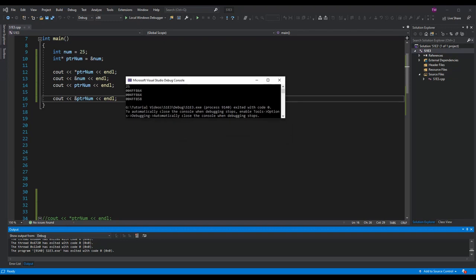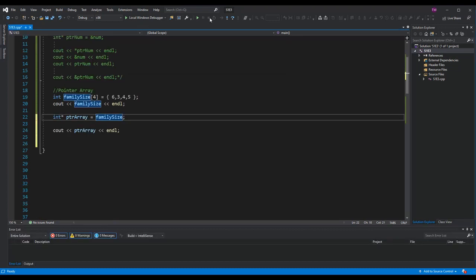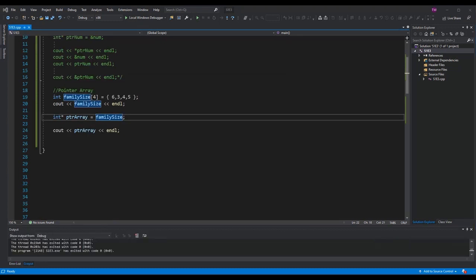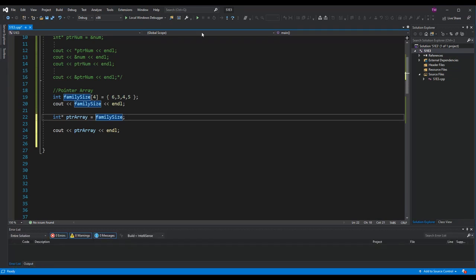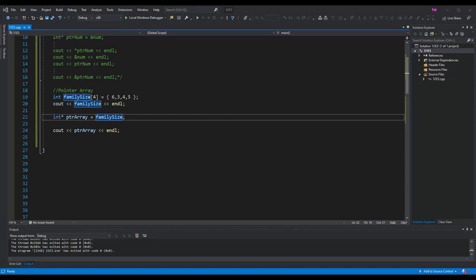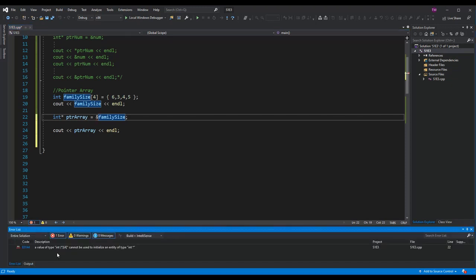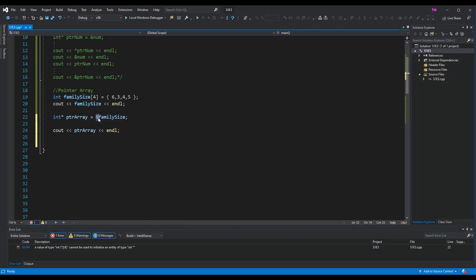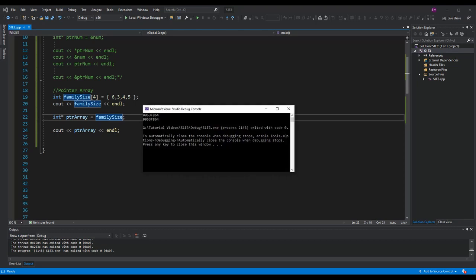I think now is a good time to circle back to our array called family size. On line 20, I am attempting to print the array values to my console, but as we saw earlier, I am only going to get the family size address, not the value. Out of curiosity, what if I try to use the ampersand with family size? I get an error, because the array is already a pointer address. I don't need the redundant ampersand for getting the array address.